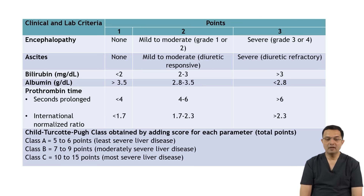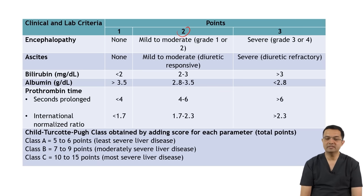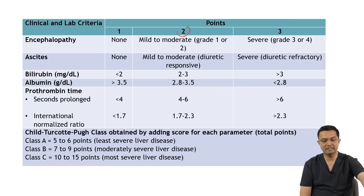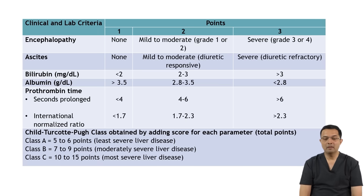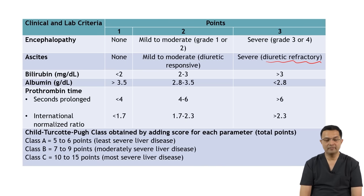If there is mild to moderate encephalopathy, the score given is 2, and if there is severe encephalopathy, the score given is 3. For ascites: if there is no ascites, the score is 1; if there is mild to moderate ascites, the score is 2; and if there is severe ascites which is diuretic-refractory, the score is 3.